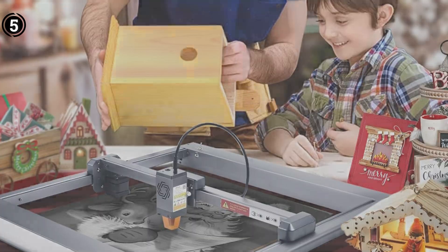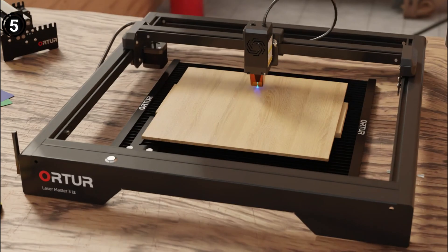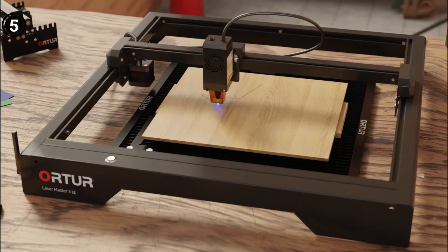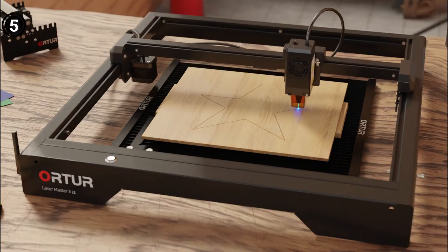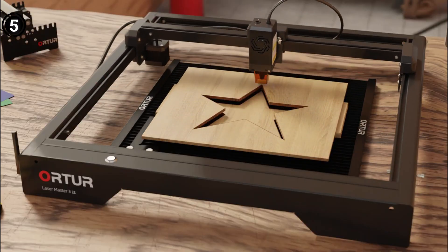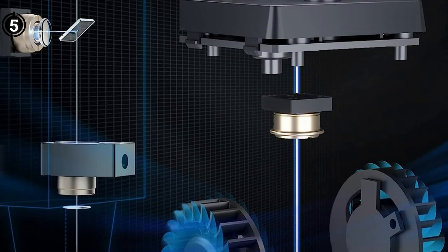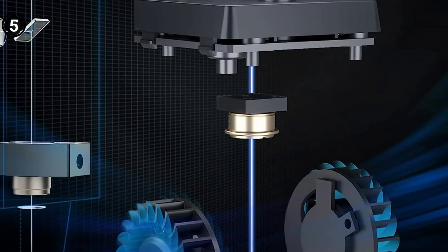The integrated air assist, dual fans, foldable focal gauge, and lightweight design at only 235 grams further enhance the machine's performance and ease of use. It can work at a high speed of 20,000mm per minute, saving valuable time compared to similar brands.